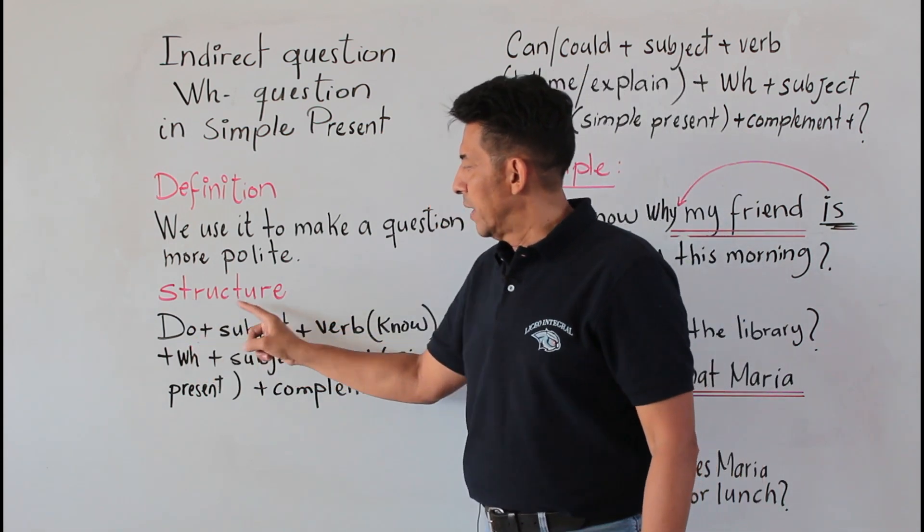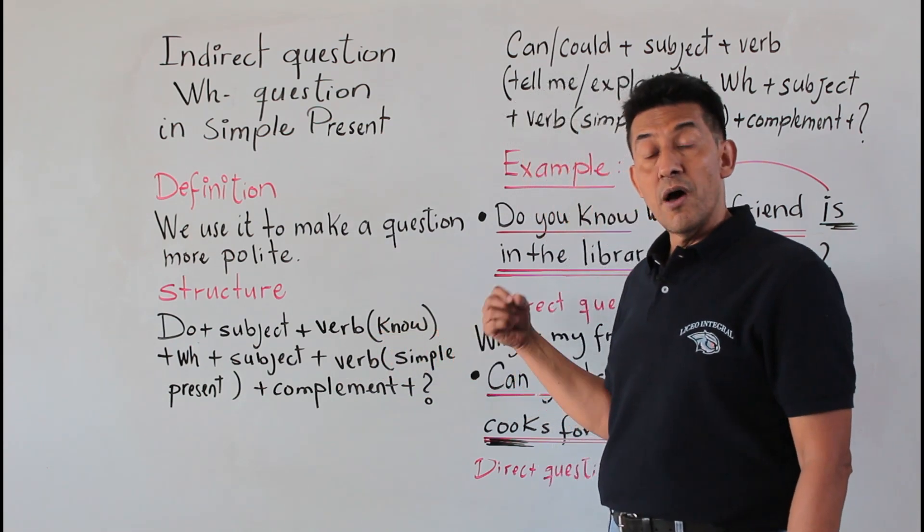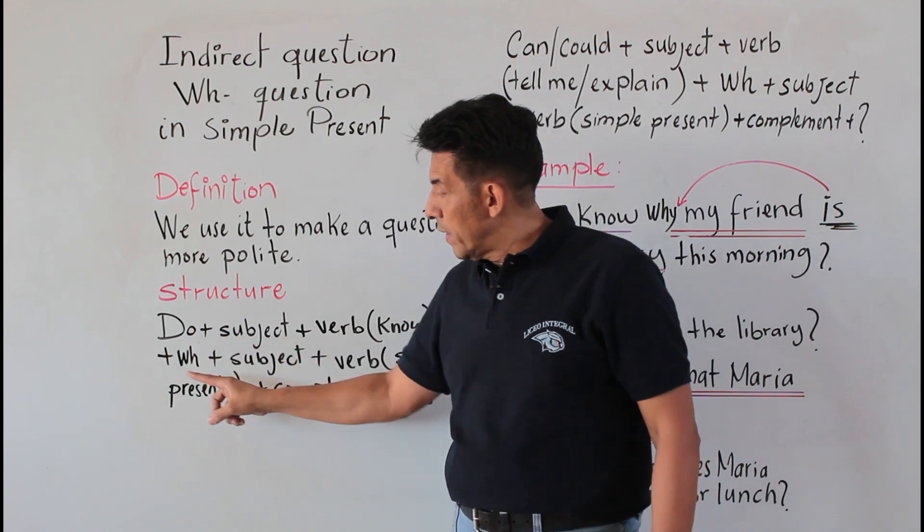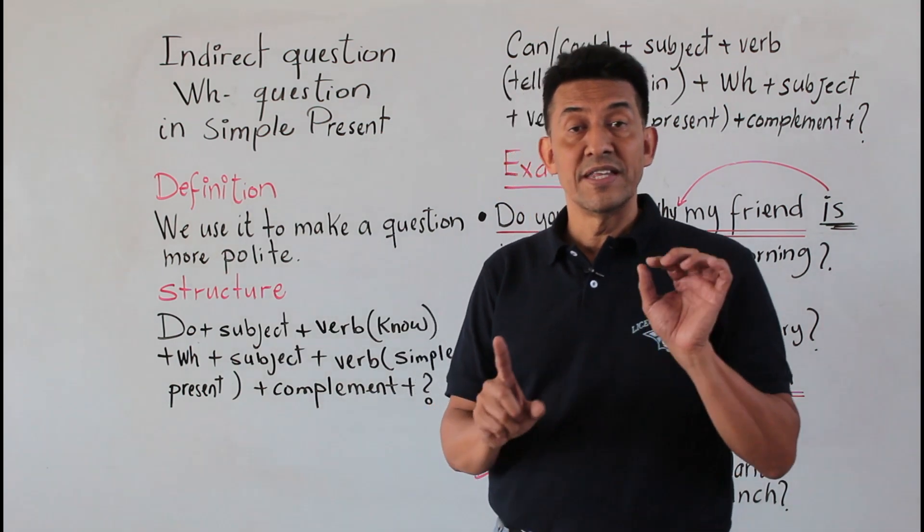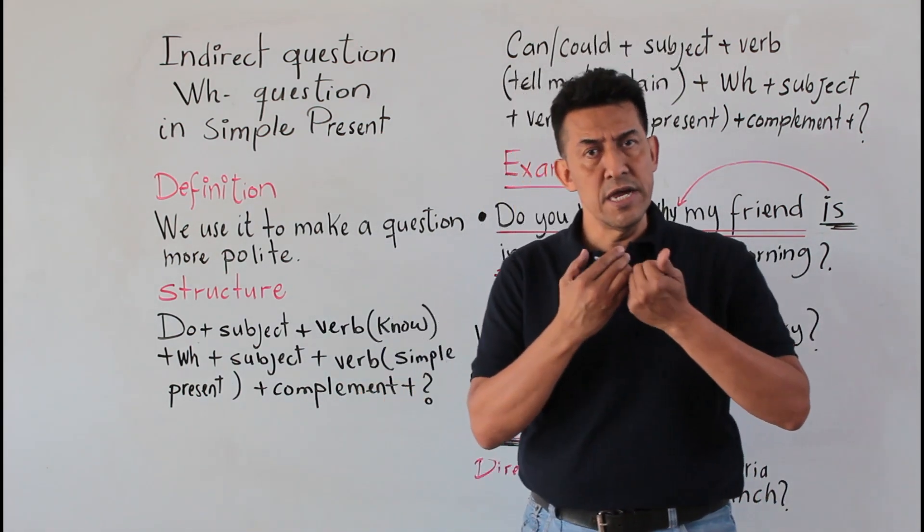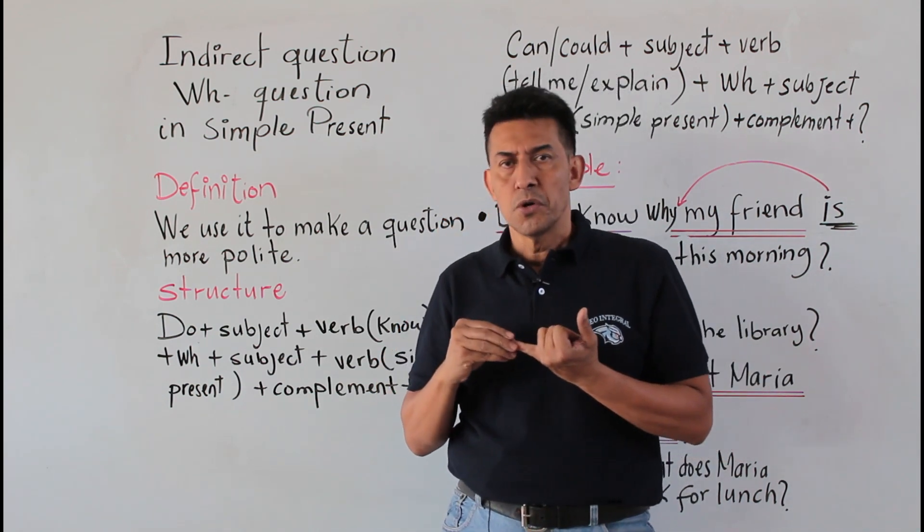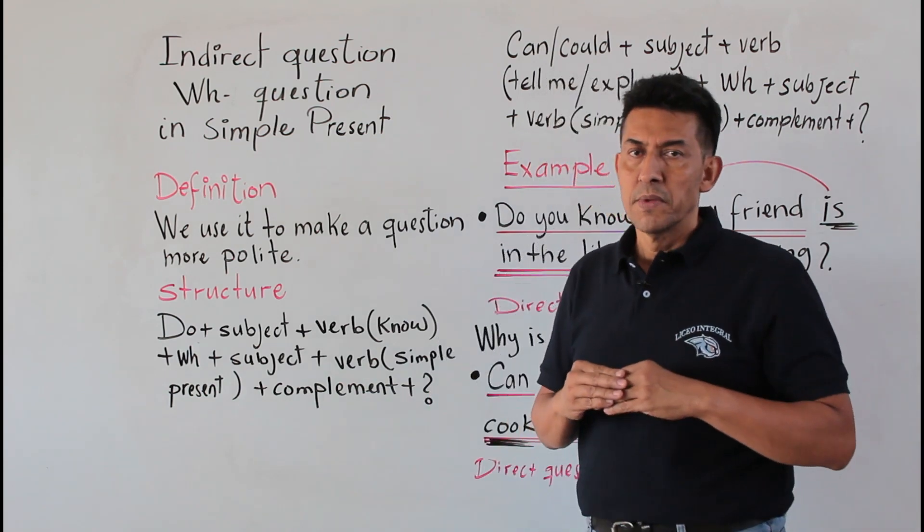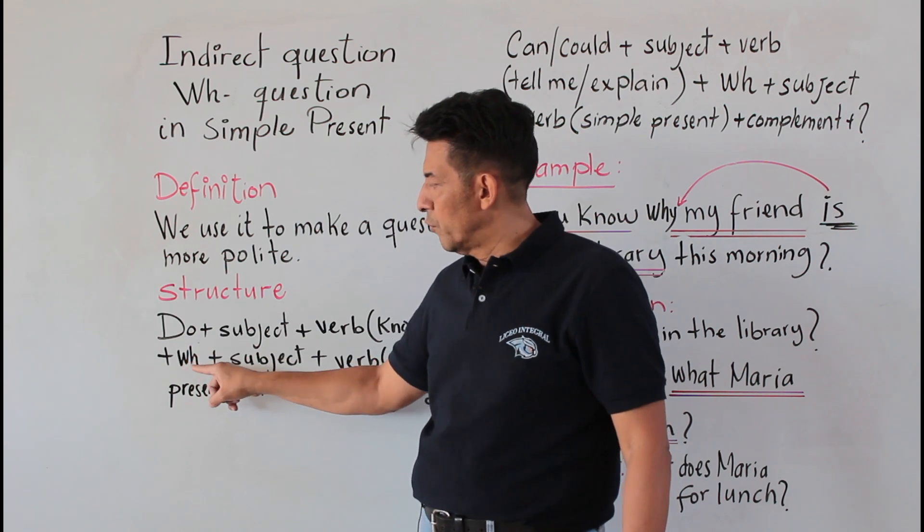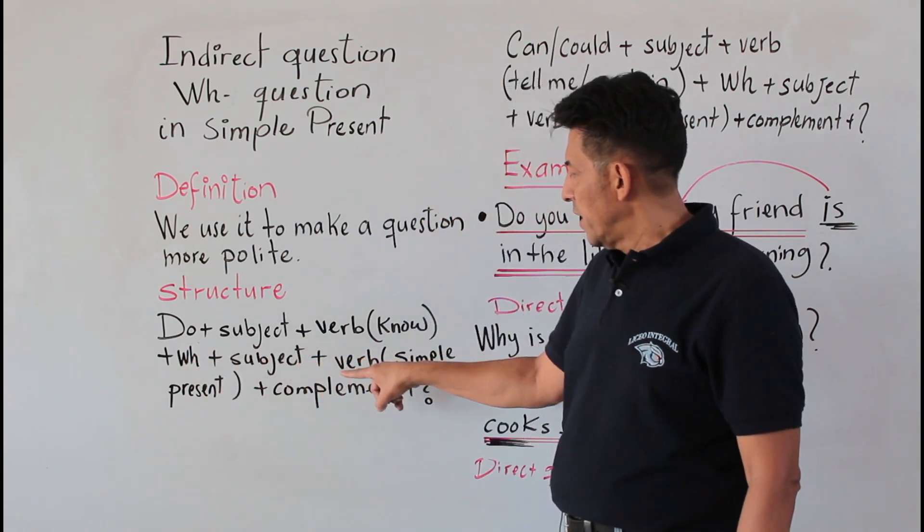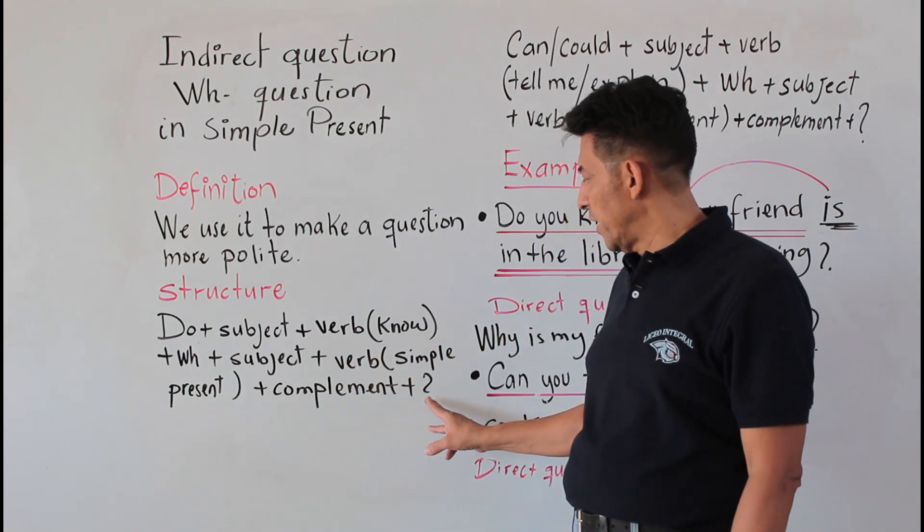We use do plus subject plus verb. After that, we add a new element: the wh-word. Remember, for wh-words we have where, why, what, and some others. So in this part goes the wh-word, after that the subject, the verb which has to be in simple present, then the complement and the question mark.